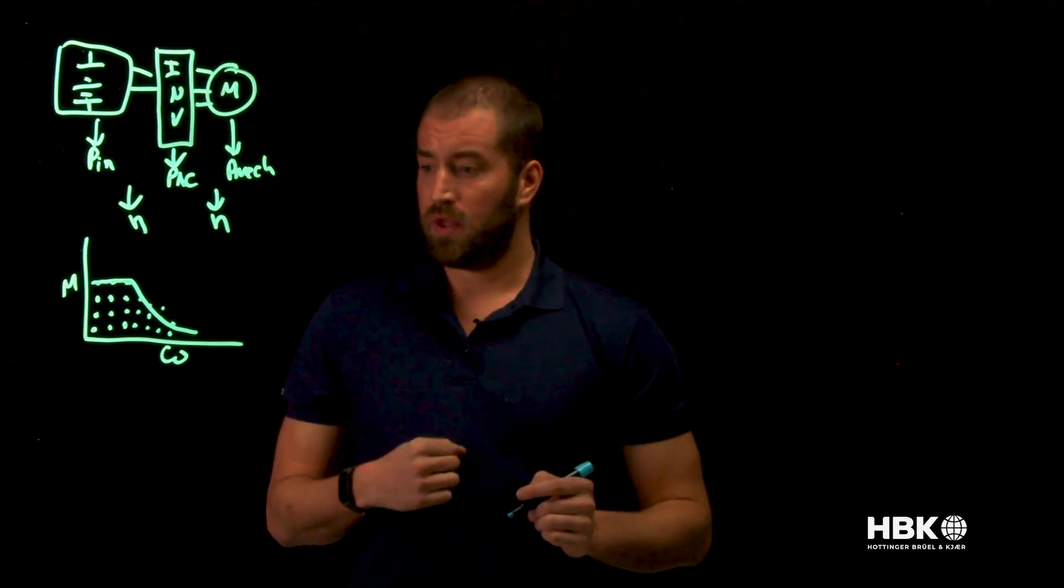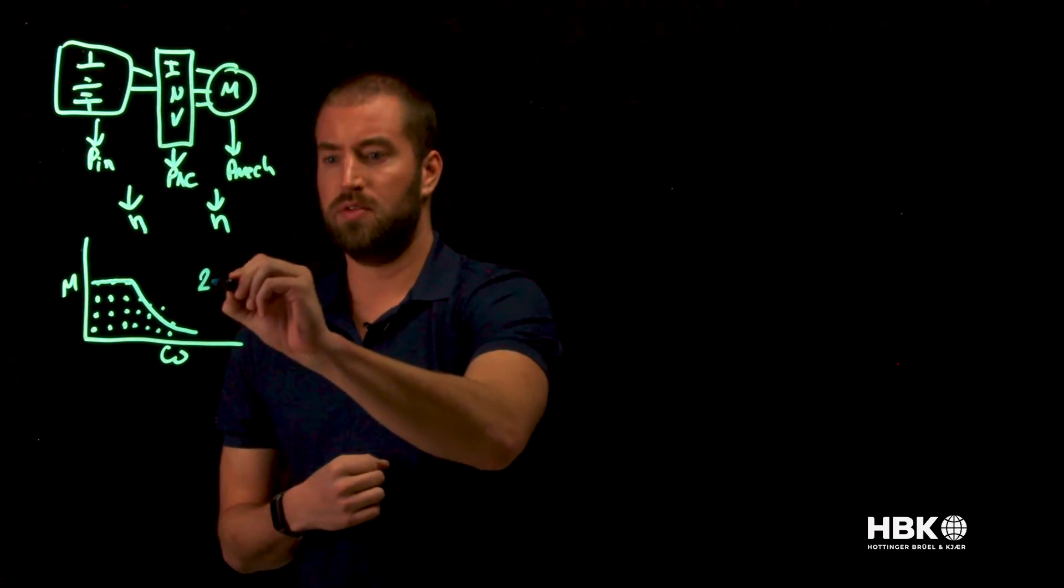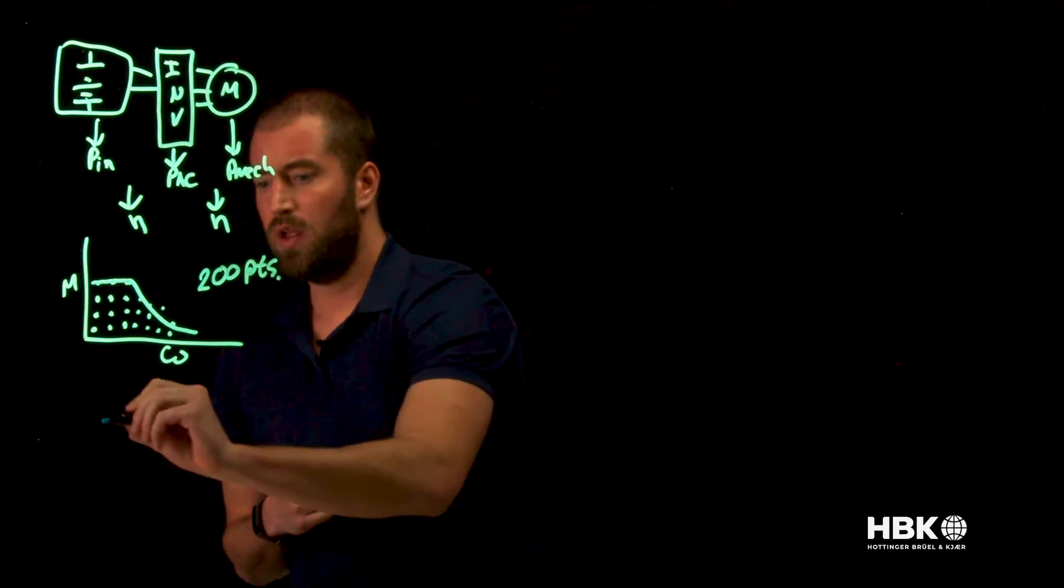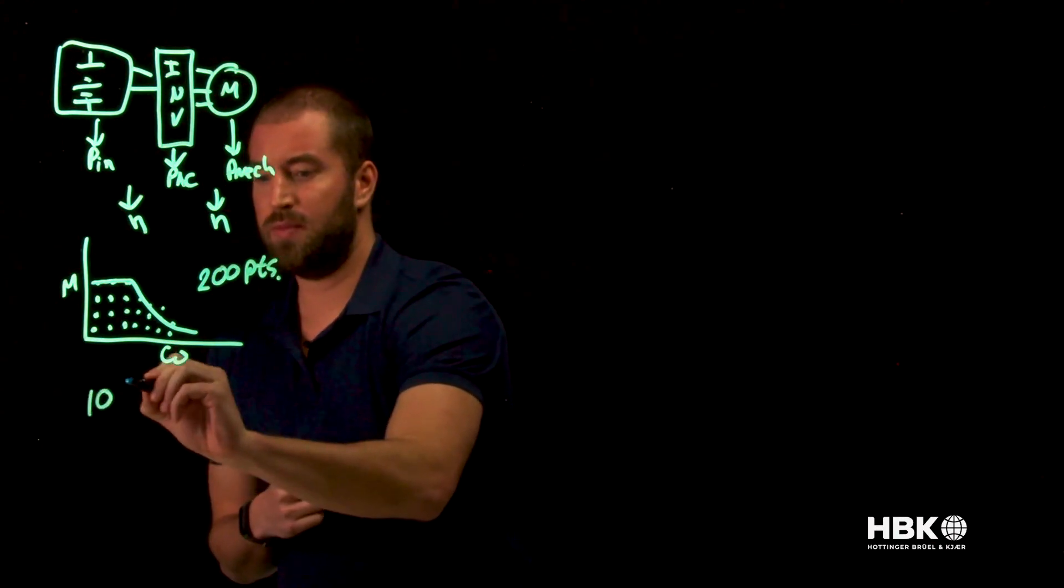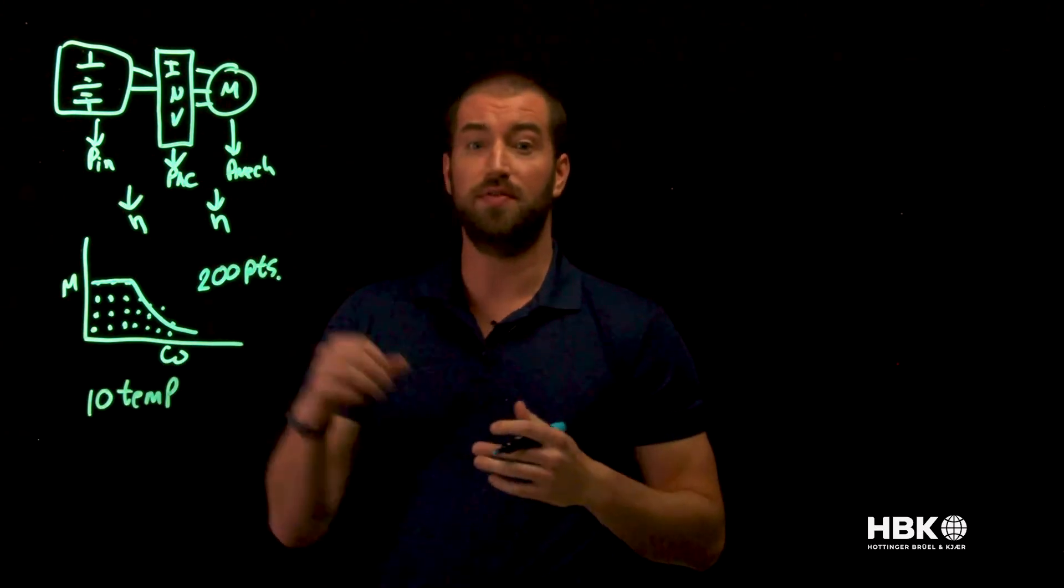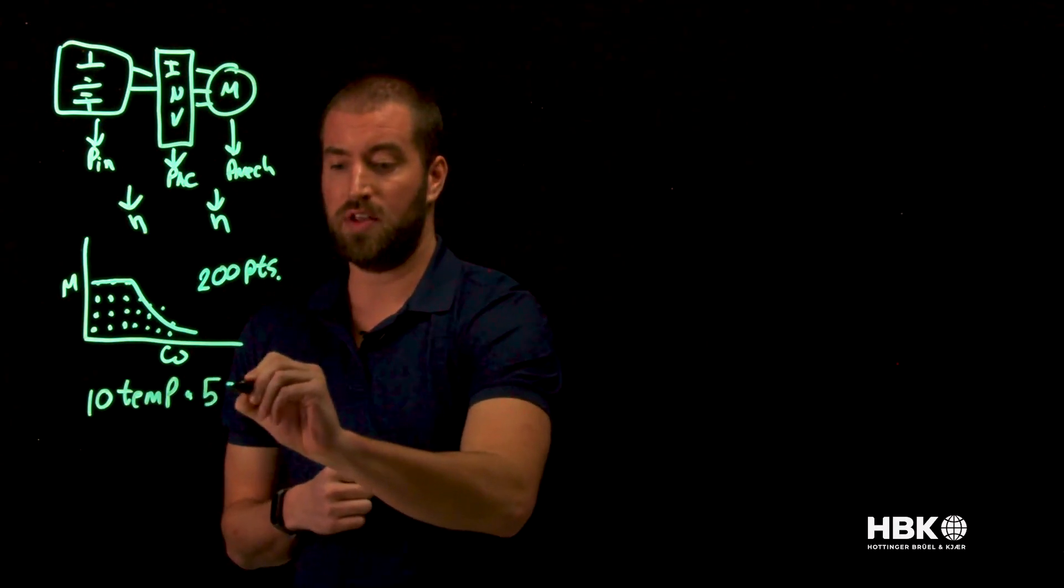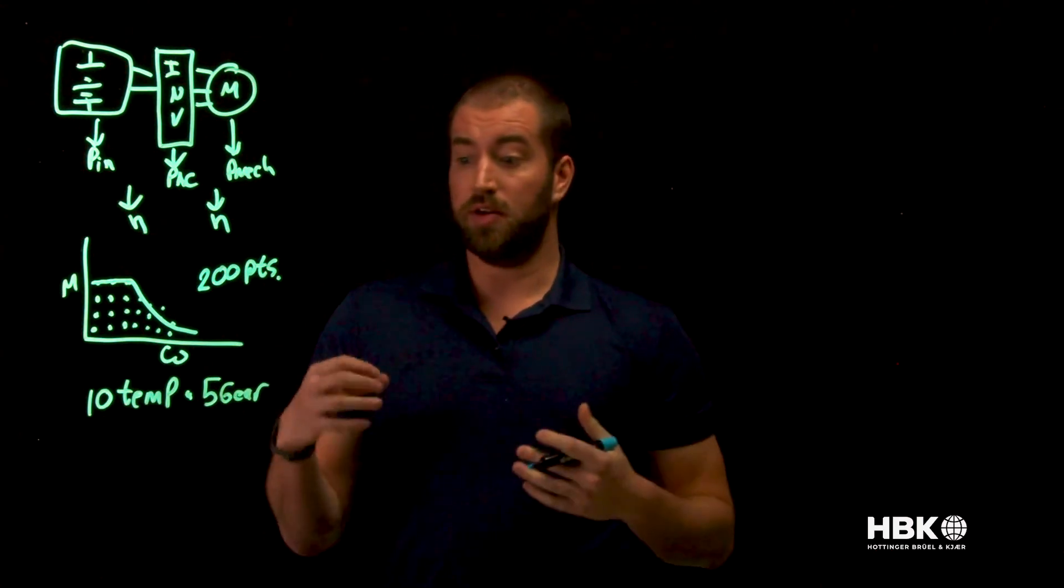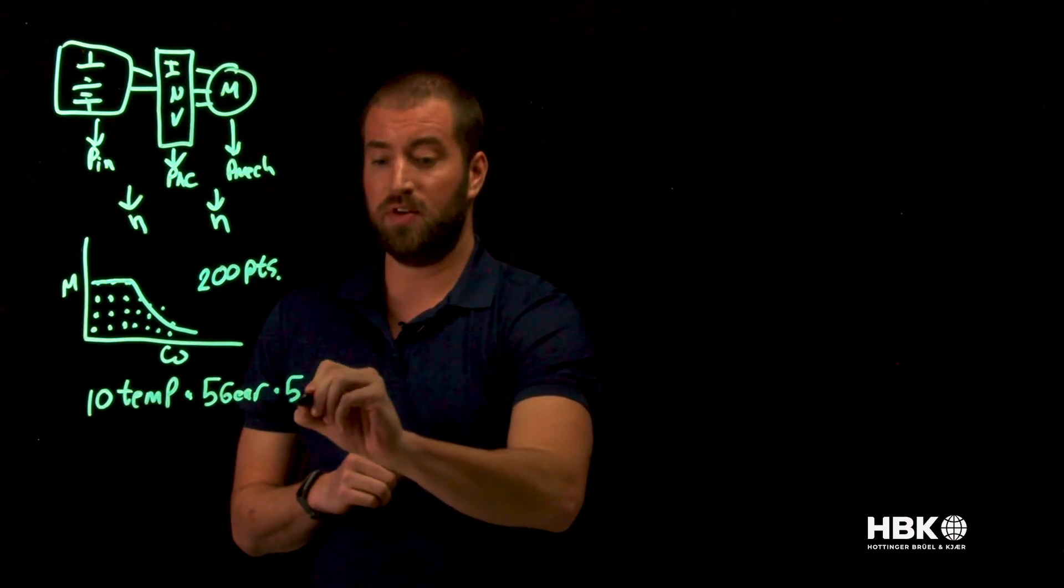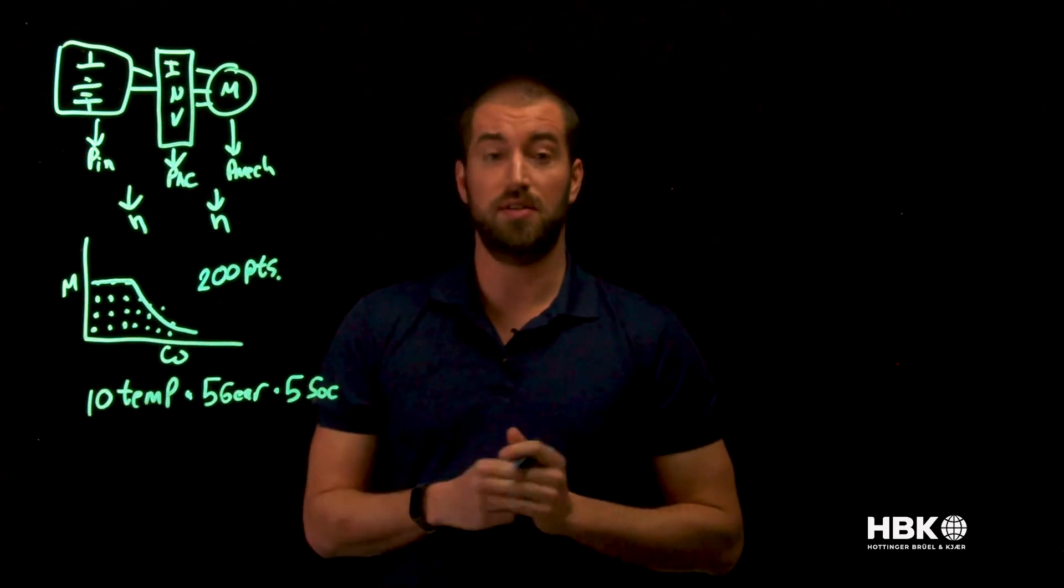Now let's take an example. Let's say in our vehicle our efficiency map is 200 points. Seems reasonable. We have 10 different temperatures that we're concerned with, so we have 10 different thermal regions that have different efficiency maps. Now this is going to be a hybrid so we're going to have five gear states. So we need to understand the 10 temperatures for each gear state. And we're going to have five different states of charge, so five different battery states. And again we need to understand each of these scenarios.